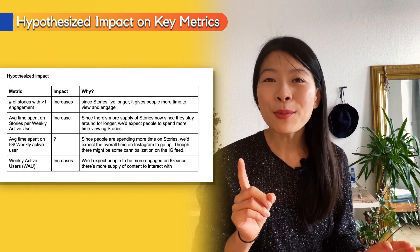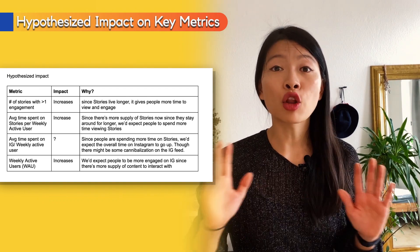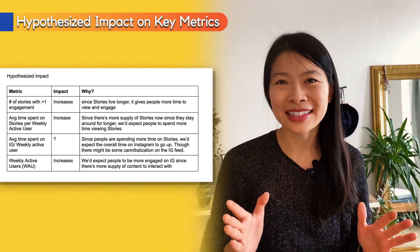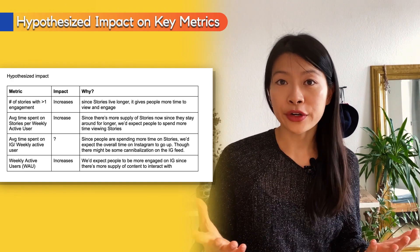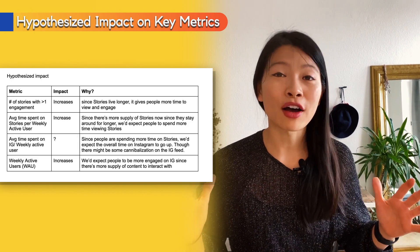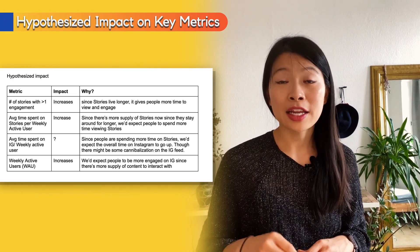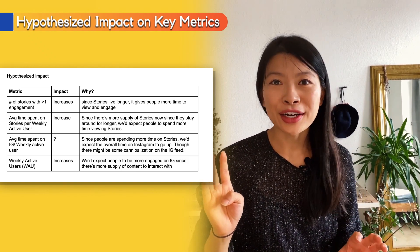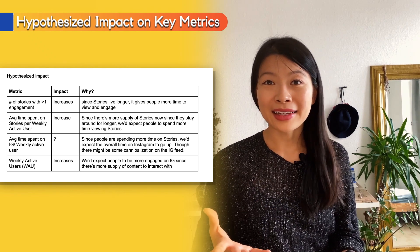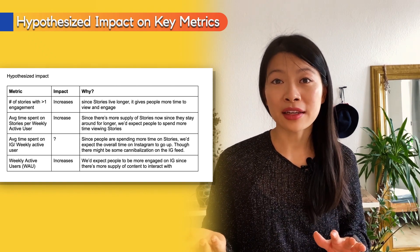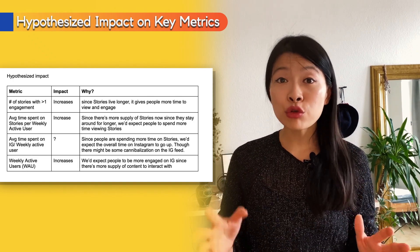For the number of stories with at least one engagement, I hypothesize this will go up because the longer content stays on the platform, the more opportunity it has to get engagement. Average time spent per weekly active story user should also go up — more supply means more stories to view and engage with. This might also increase average time spent on Instagram overall, as long as Stories doesn't cannibalize other features. We could also see an increase in weekly active users on Stories.